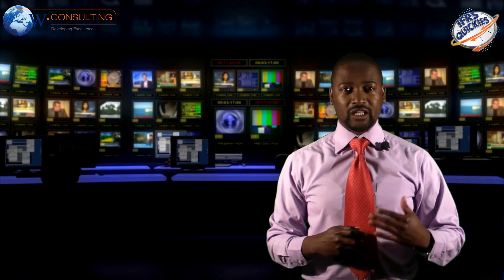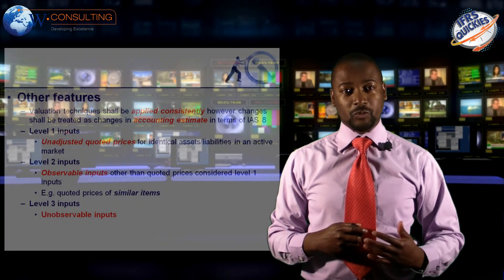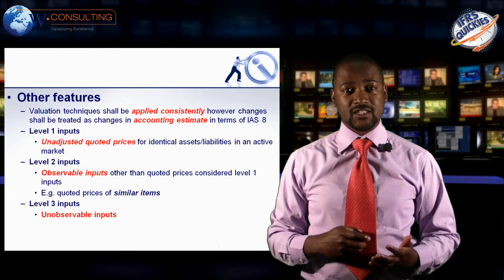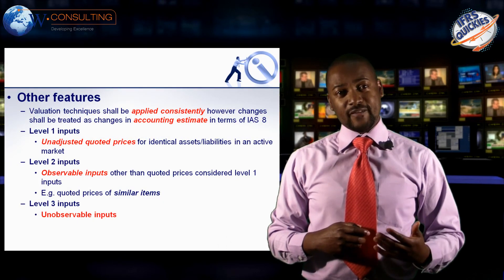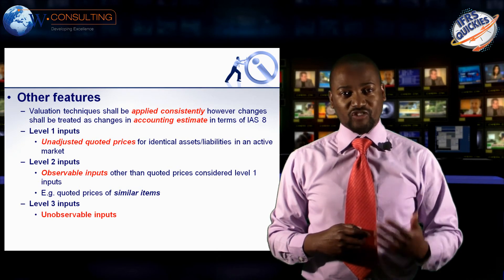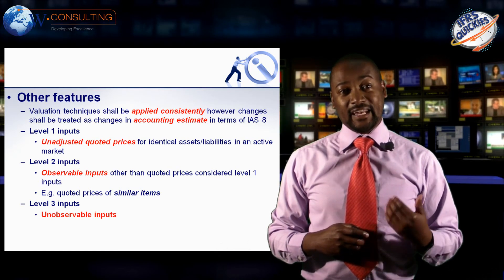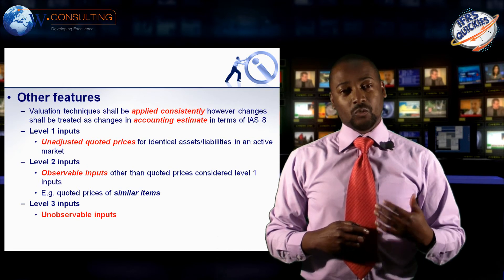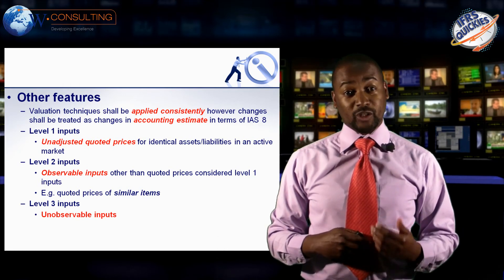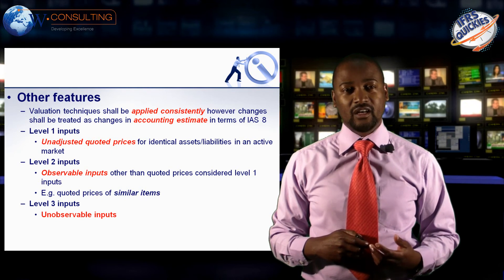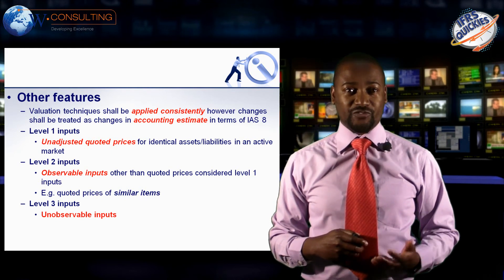Some of the other features in the standard, borrowing heavily from IFRS 7 on disclosure of financial instruments, include the levels at which fair value is determined. A level one fair value is an unadjusted quoted price. A level two input is a fair valuation determined on observable inputs. A level three fair valuation is based primarily on unobservable inputs — in other words, it would be management's best estimate of fair value.